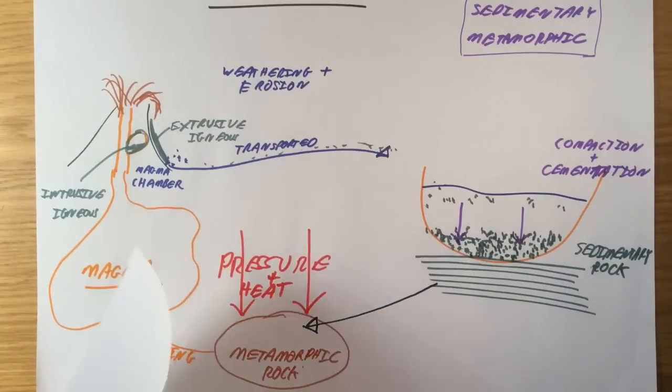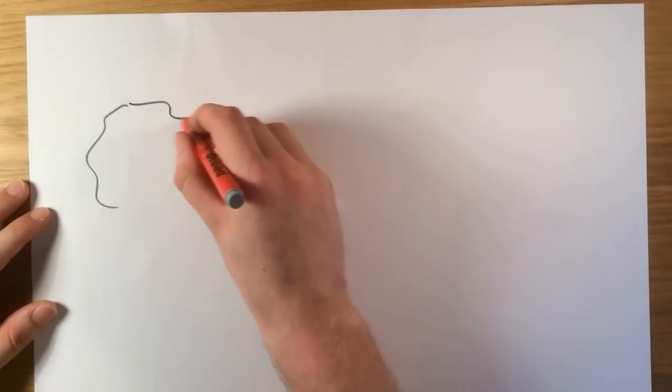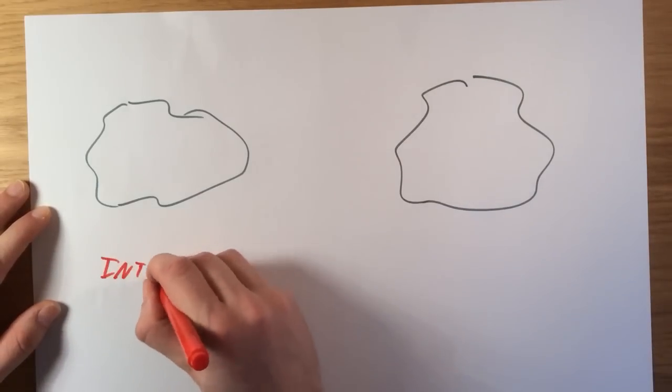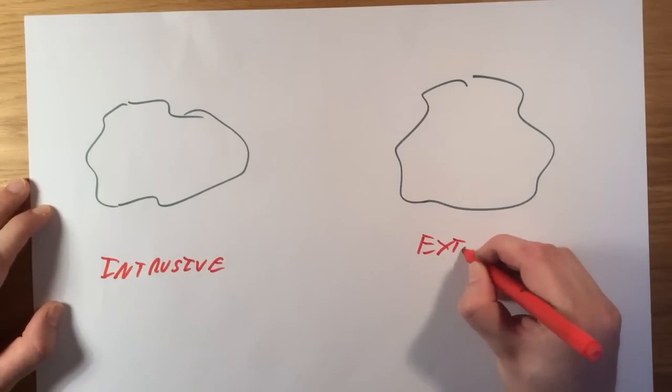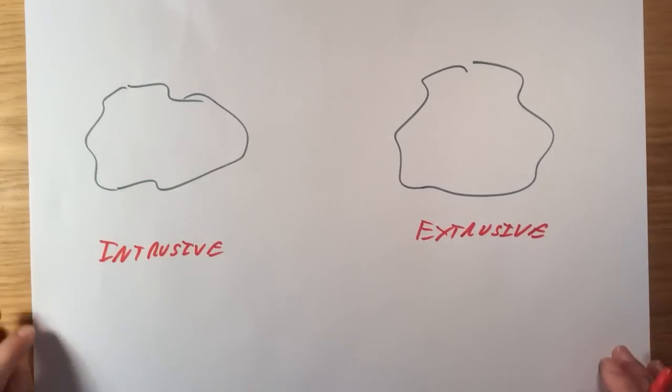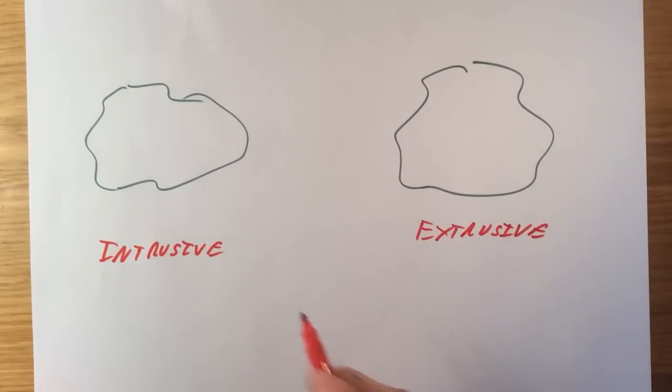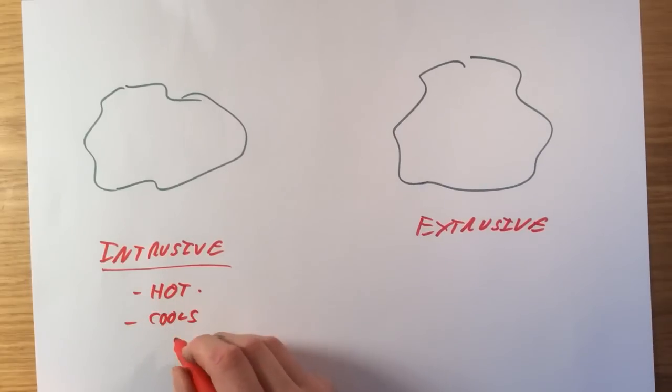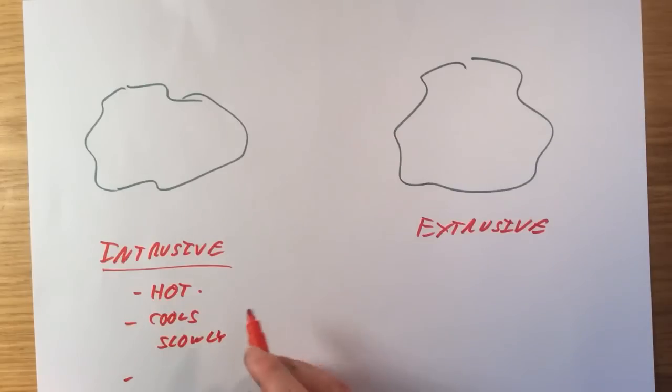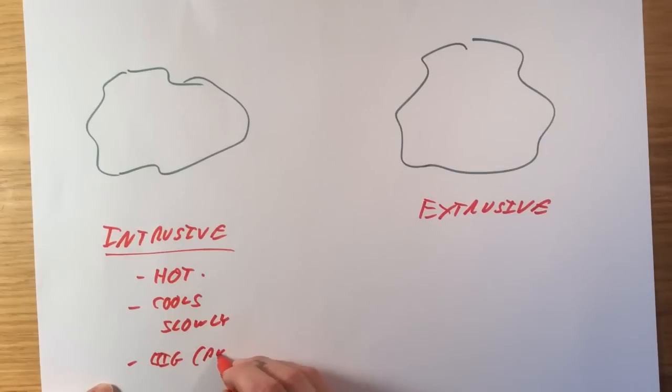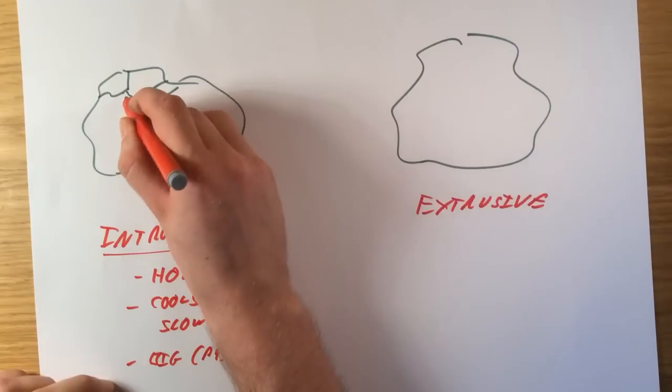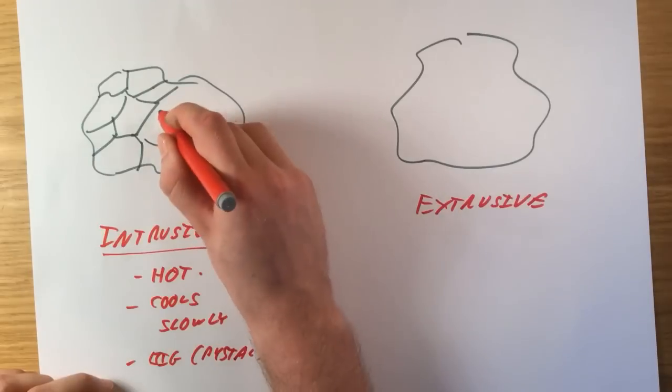The only other thing we need to know is the difference between extrusive and intrusive igneous rocks. So, if I draw two really bad drawings of rocks here. And let's say this is our intrusive rock. And this is our extrusive. We can tell the difference between these just by looking at them. And the reason is an intrusive rock cools down inside the volcano where it's still very hot. This means it cools slowly. And that gives lots and lots and lots of time for big crystals to form. So, if you were to look at an intrusive rock, you would see quite large, well-defined crystals within this rock because it's cooled down over quite a long period of time.